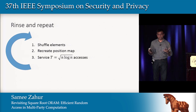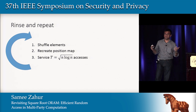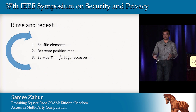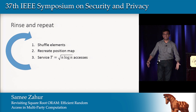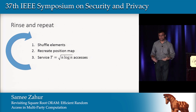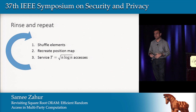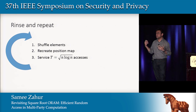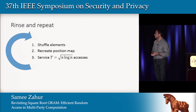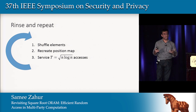The overall RAM process looks like this: start with shuffling, produce a position map, make t accesses, go back and shuffle again, produce a new position map, and repeat. For each shuffle you do sqrt(n) * log(n) accesses, so the amortized cost per access is O(sqrt(n) * log(n)).